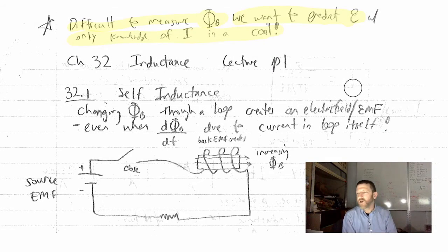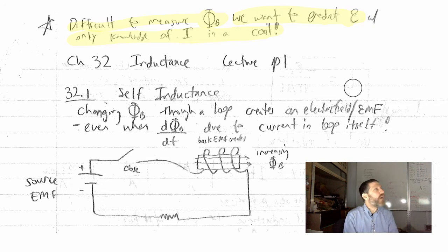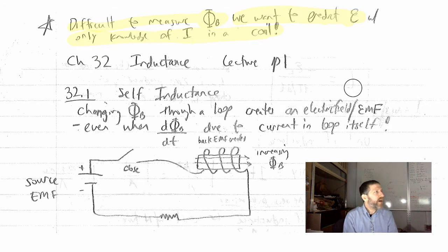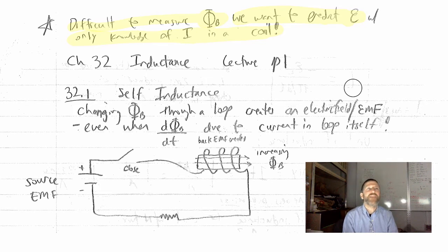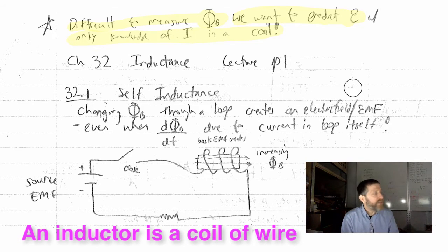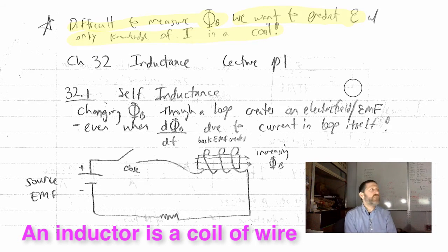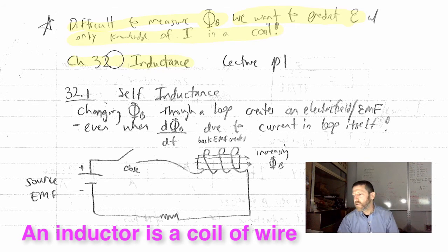Every physics lab has an ammeter, so as long as we have an ammeter we can measure current. This is why we want to figure out how the magnetic flux relates to the current in a solenoid. Notice that a solenoid is just another name for a coil. We have yet another name for that today: an inductor. An inductor is the same thing as a coil, is the same thing as a solenoid. We typically refer to them differently depending on what they are doing. So we are going to start talking about inductance today.